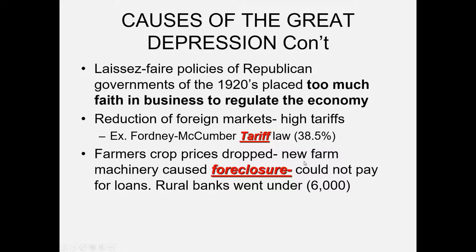The farming sector's depression actually began around 1925 or 1926. Crop prices dropped because of overproduction tied to new farm machinery — a double-edged sword for farmers. It caused farmers to finance new machinery and then produce more and more agricultural product, which drove prices down due to oversupply, while they still had to pay off that farm equipment. Beginning in the mid-1920s in the agricultural sector, we see a large number of foreclosures and many rural banks failing because they had lent to farmers who couldn't repay. About 6,000 rural banks went under in the last years of the 1920s.